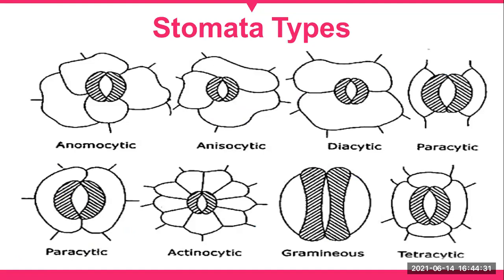Regarding types of stomata: anomocytic, anisocytic, diacytic, paracytic, actinocytic, gramineous, and tetracytic. The basic difference is the number of subsidiary cells surrounding the guard cells. Anomocytic has four surrounding epidermal cells. Anisocytic has three cells — two identical and one smaller. Diacytic has two epidermal cells. Paracytic has two cells arranged parallel to the guard cells.